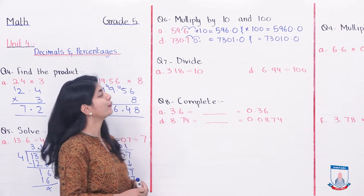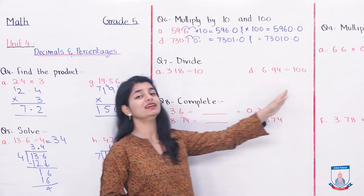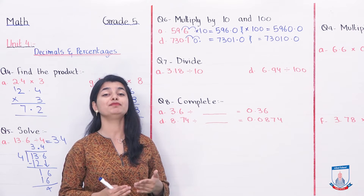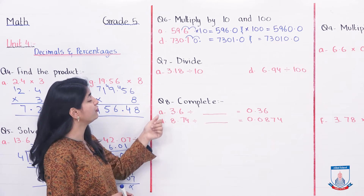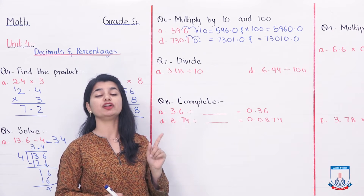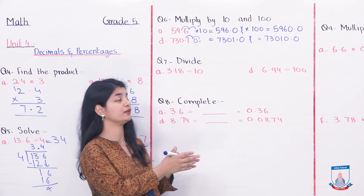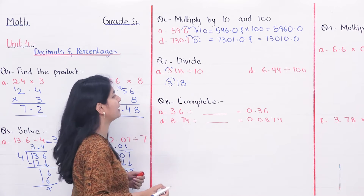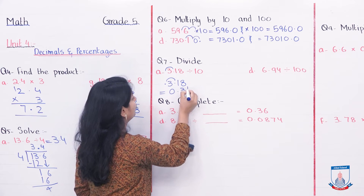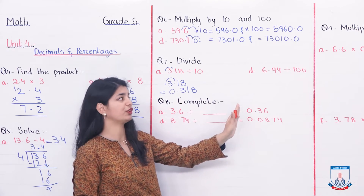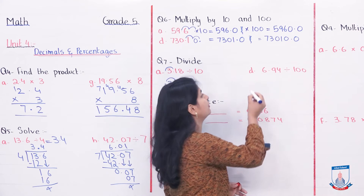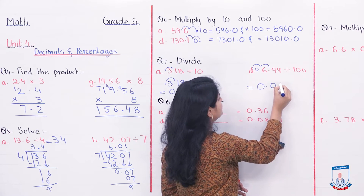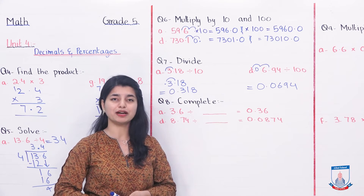And we can now look at question number 7 — Divide. Now, you are dividing by 10s and 100s. Because when you divide with zeros, the decimal position changes. So, if you look at part A: 3.18 divided by 10. 10 has one zero, so we have to move the decimal one time to the left. When we move it towards the left, 3.18 becomes 0.318. For part B, there are 2 zeros — you divide by 100 — so the decimal will go 2 times to the left: 1 and 2. And we put the decimal here, so the answer would be 0.0694. In this way, you have to complete the rest of the parts of question number 7.